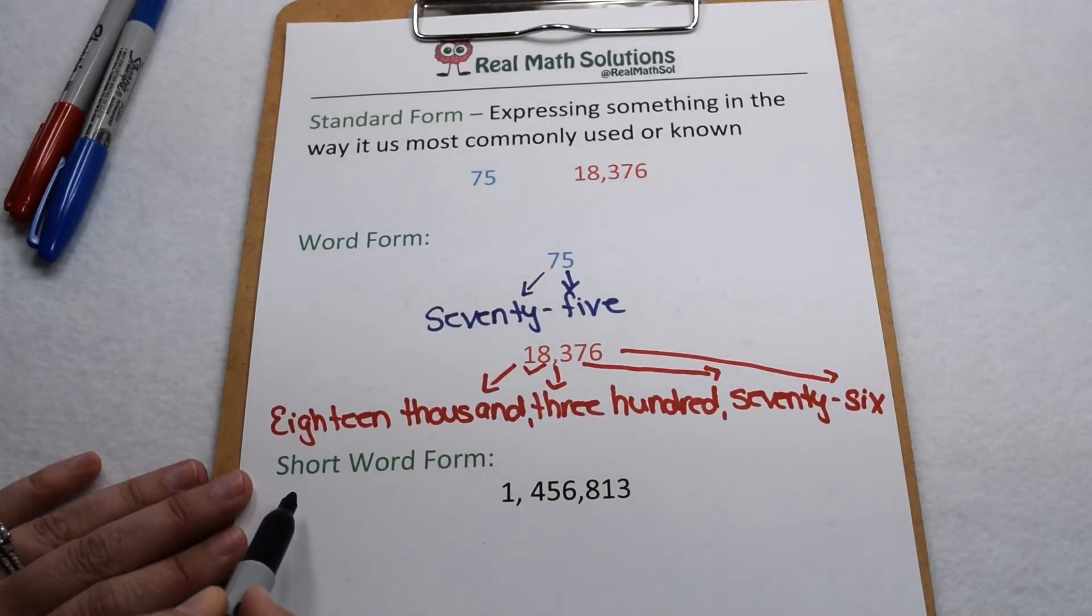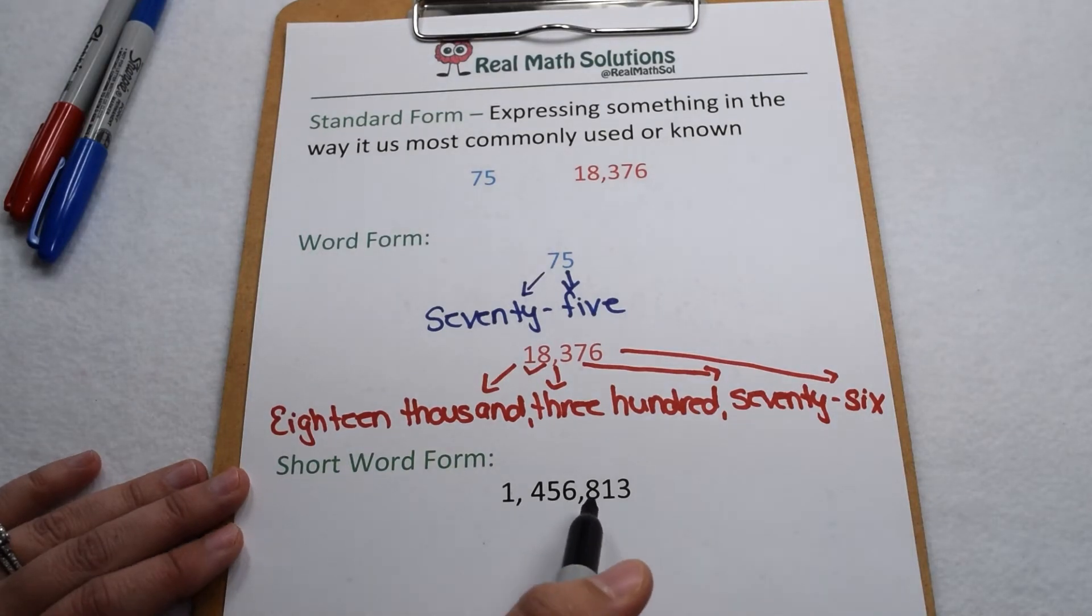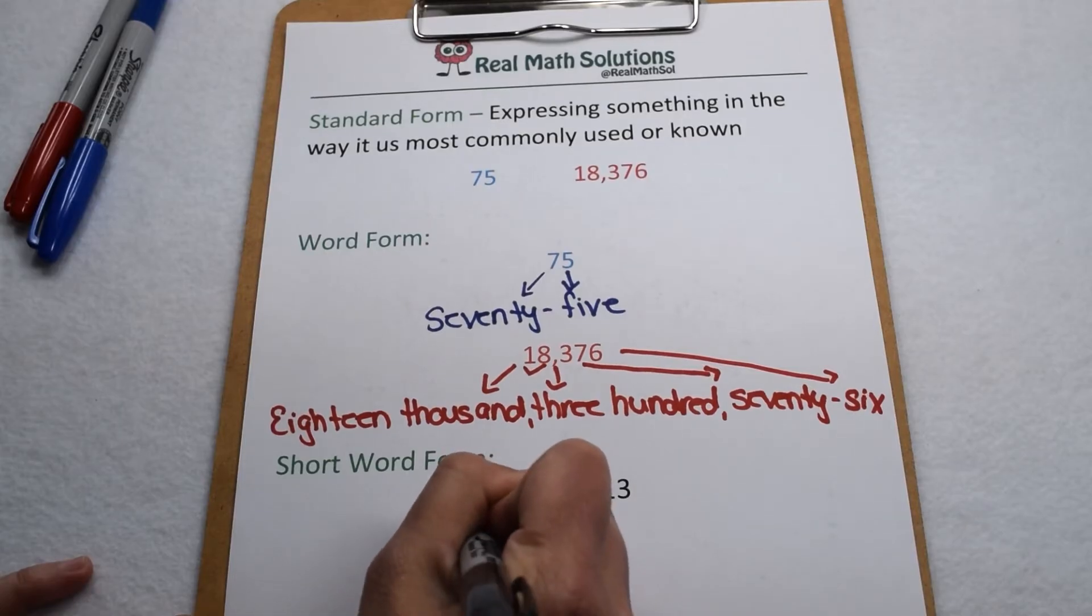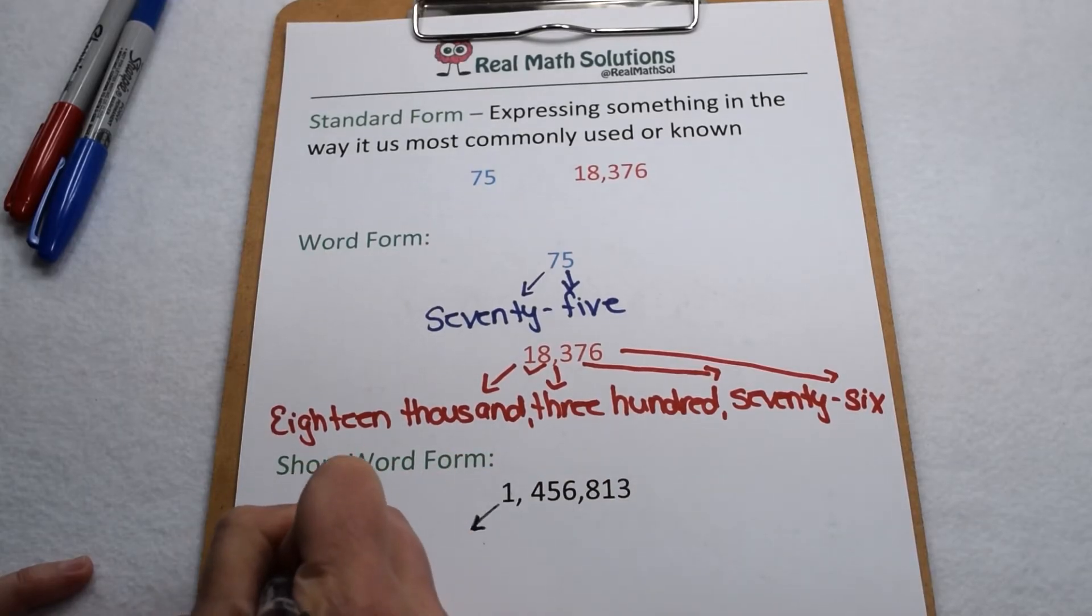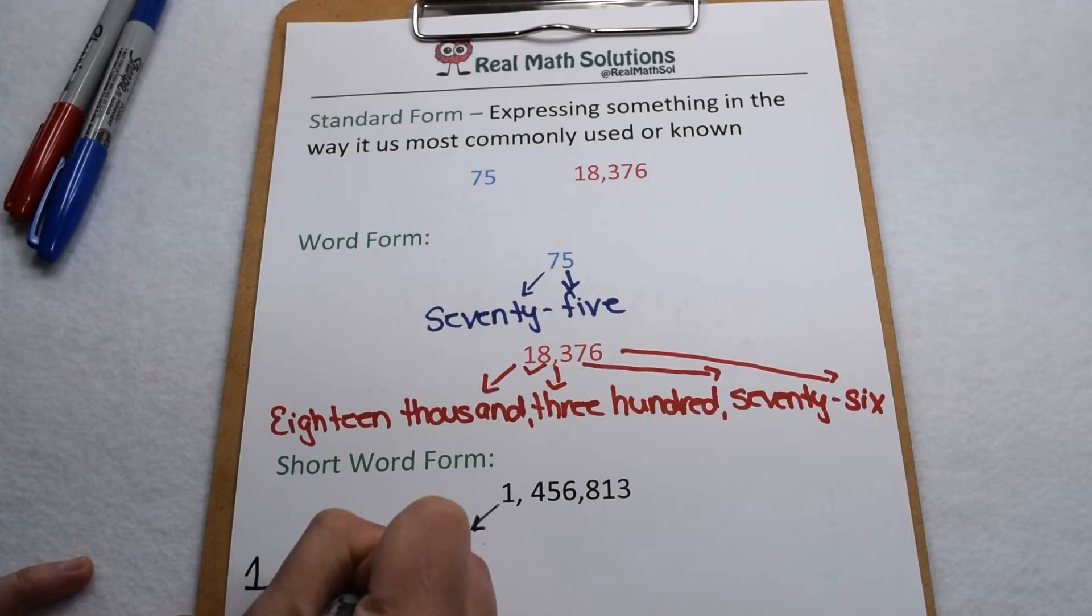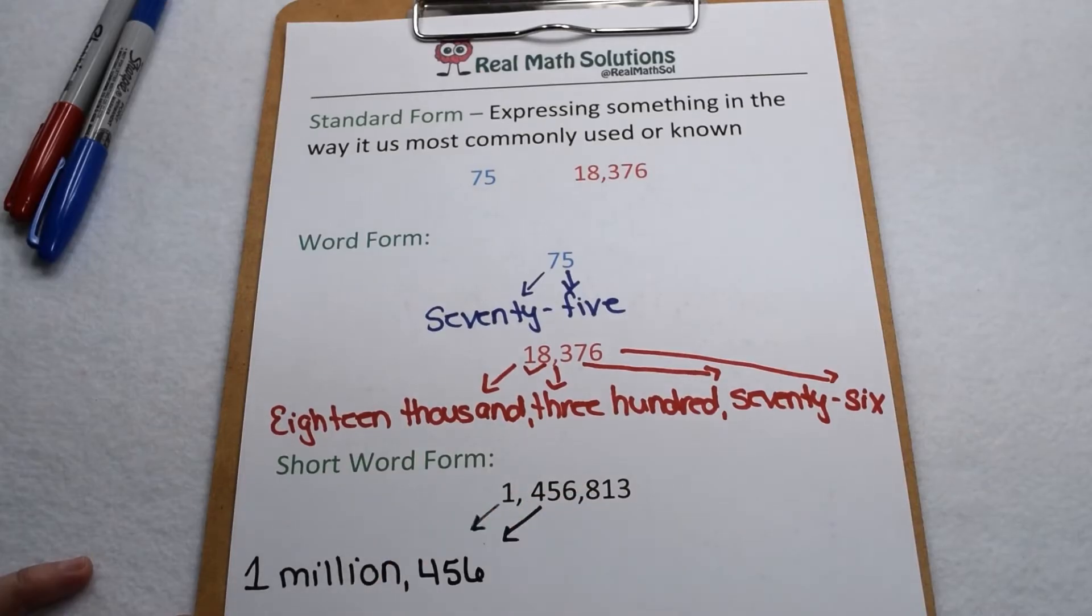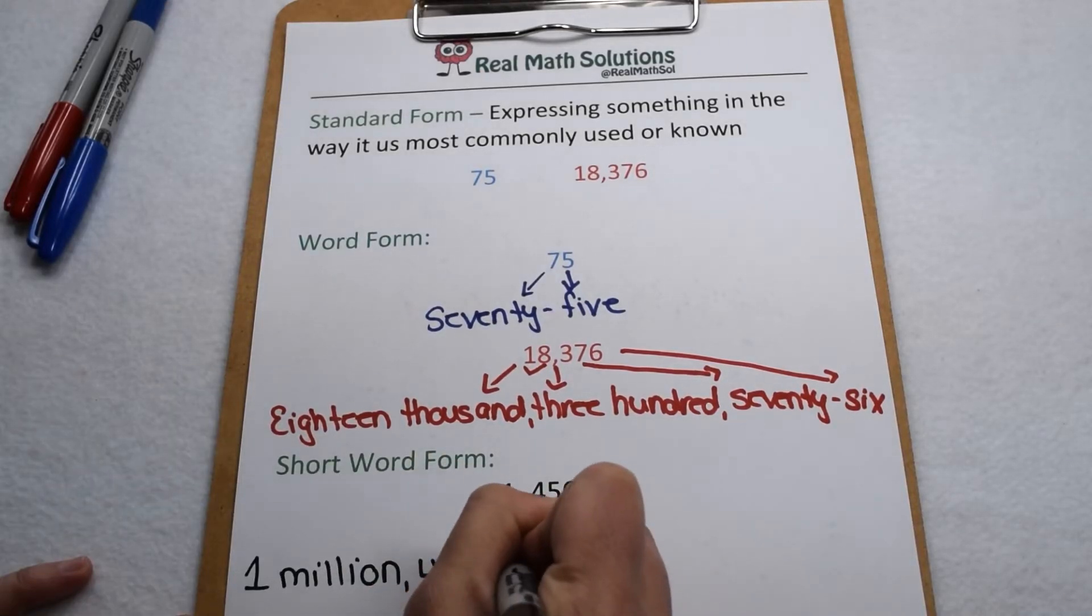So as numbers get larger, we start using something called short word form. In short word form, we combine numbers and words to express them. So this number, 1,456,813. In short word form, we would start with the 1,000,000. So we would write the 1 and then the place value of million out in words. For 456,000, we would write the 456 in number form and then the place value of thousand in word form.